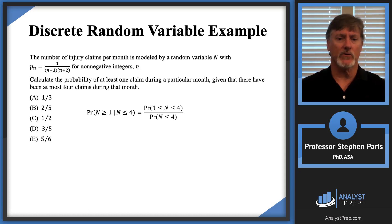Now this is a discrete random variable, so if N is between 1 and 4, it's either 1, 2, 3, or 4. So the numerator is the probability that N is 1, or N is 2, or N is 3, or N is 4.